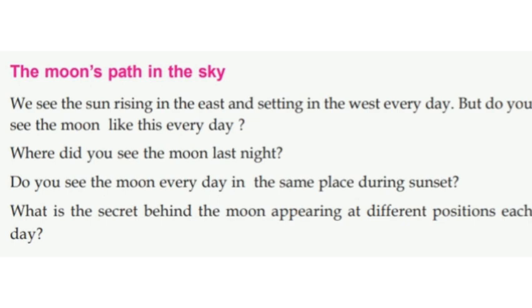What is the secret behind the moon appearing in different positions each day? The moon also rises in the east and sets in the west. The moon does not rise from the eastern horizon at the same time on all days.